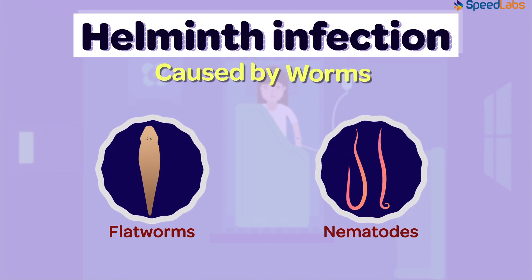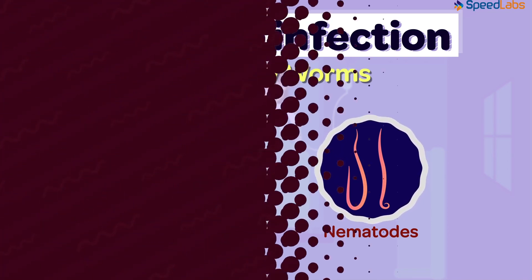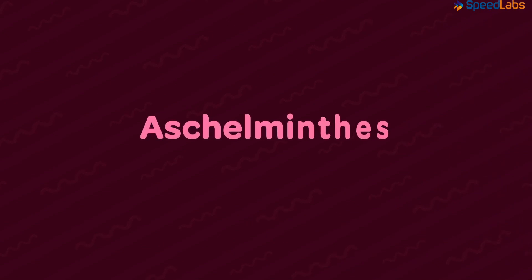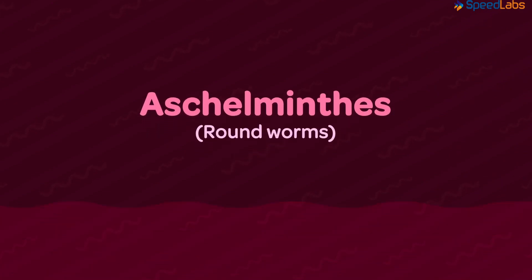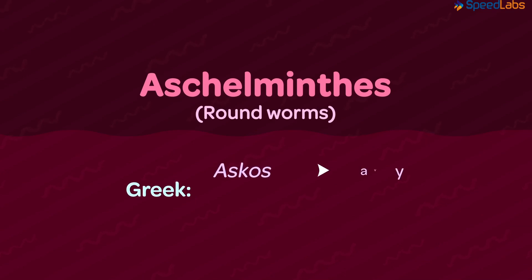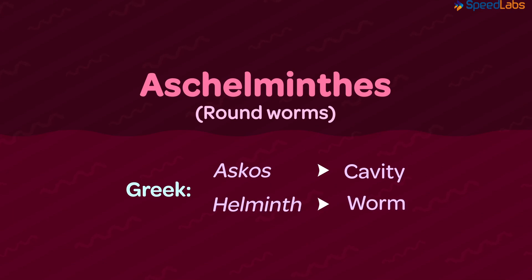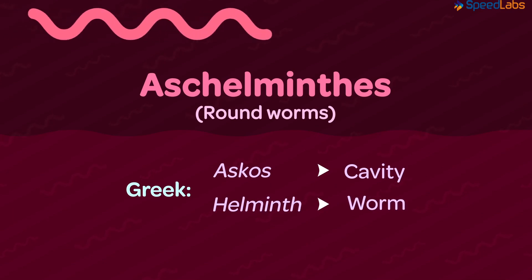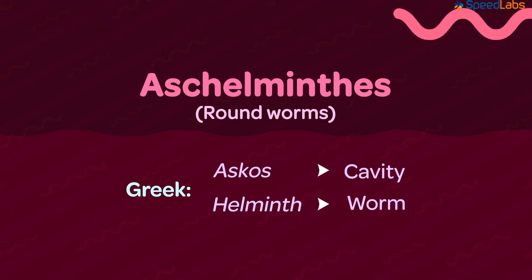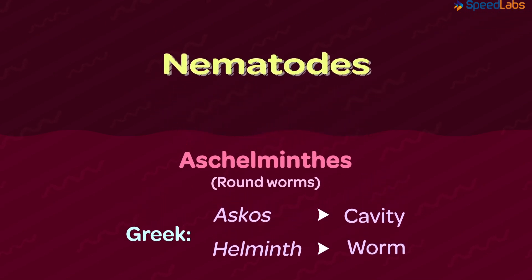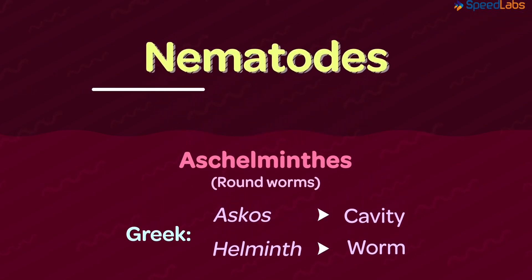We have already seen what flatworms, i.e. Platyhelminthes, are. In this video, let's have a look at the second category – Aschelminthes, also known as Roundworms. The name is derived from two Greek terms – 'Askos' meaning cavity, and 'Helminth' which means a worm. That means worms having a cavity containing a cylindrical body. Also, the name nematode indicates a thin and cylindrical body, where 'nema' stands for thread.